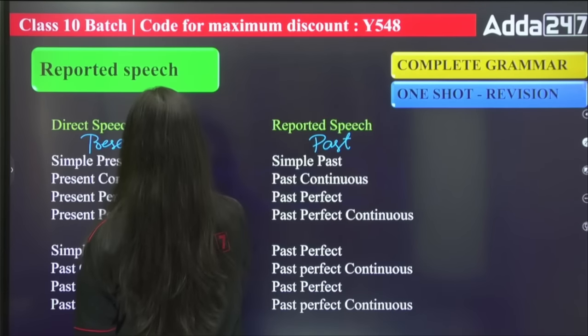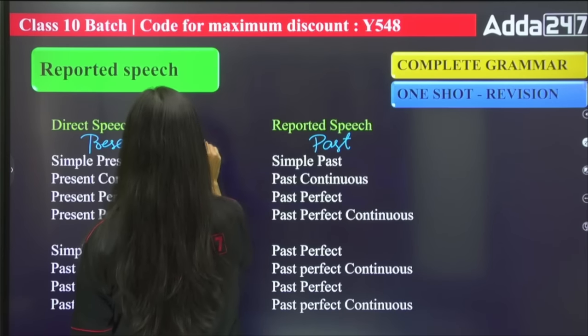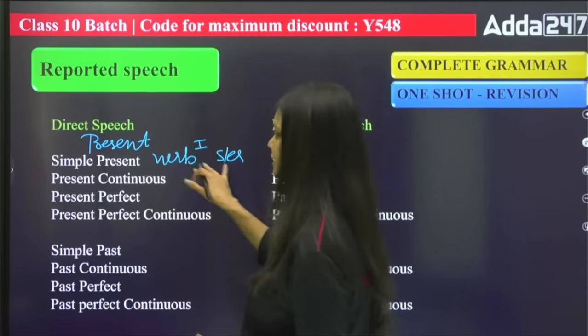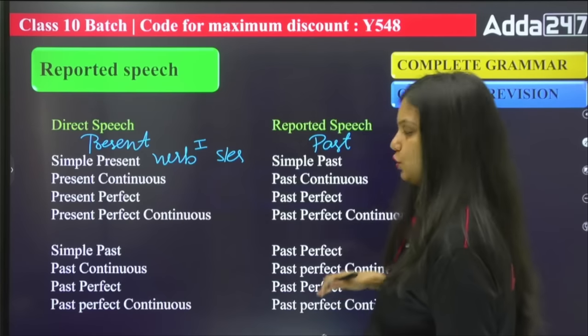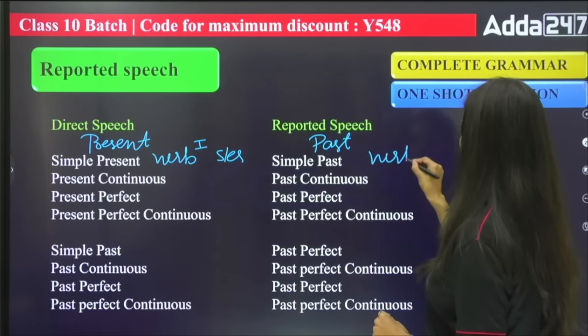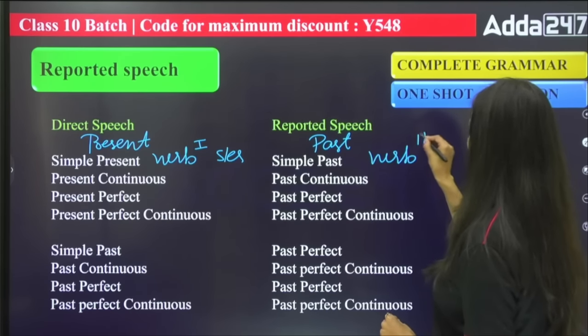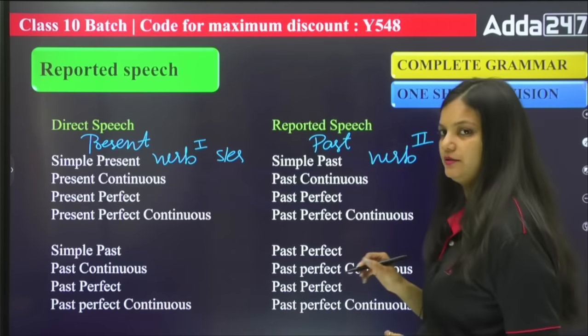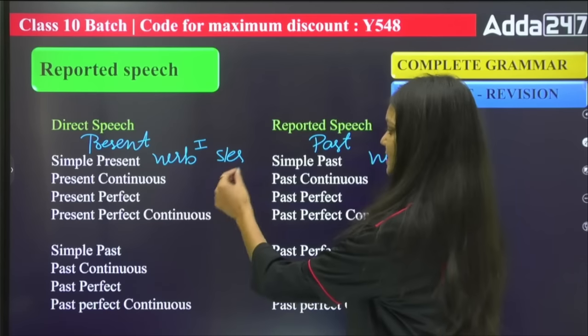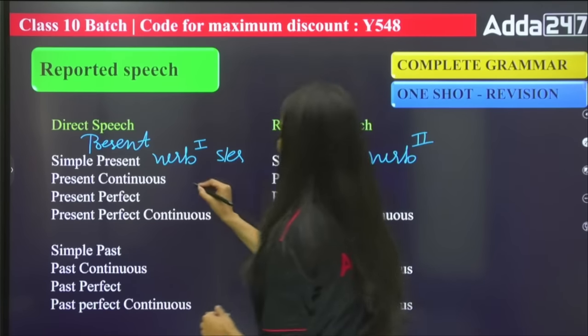Now let's talk about tense changes. The first important thing is that the verb changes to its second form — past form. For present continuous, the auxiliary 'is/are' with the '-ing' verb gets converted accordingly.